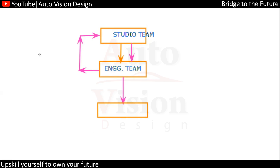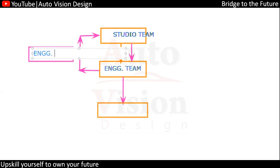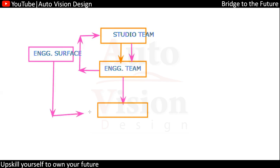If we change anything in the studio surface, that surface is known as the engineering surface. We have this name because we have changed that particular surface — from Class A we have changed something, given a proposal, gone forward with that surface, and delivered something for a specific release, say a CAE release.